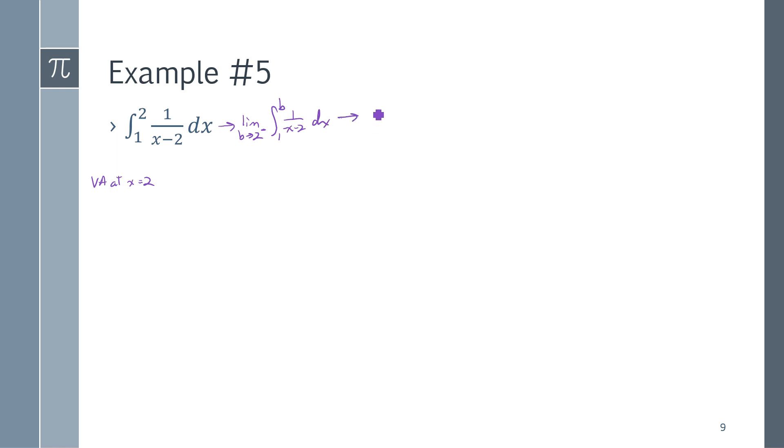Again, I focus on evaluate the integral first. And then worry about the limit. I've 1 over x minus 2, which would be the natural log. I do need my absolute value around the x minus 2 part because I'm dealing with numbers between 1 and 2 here, which would make the inside negative.